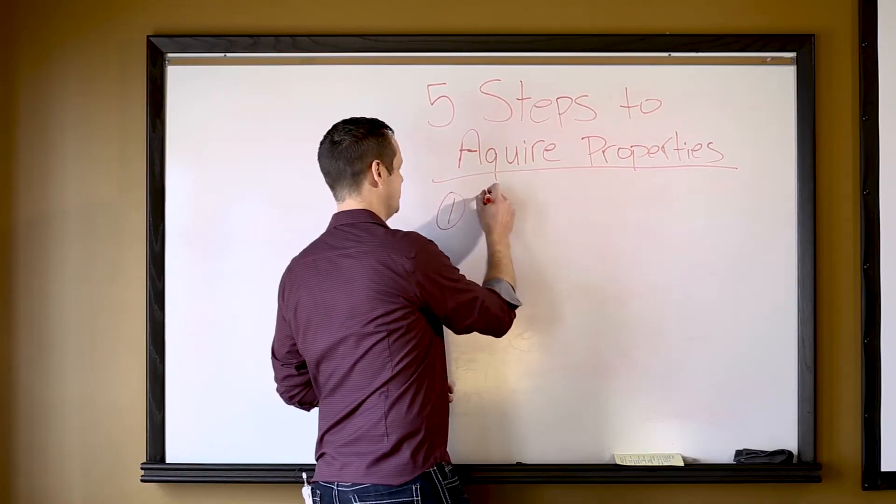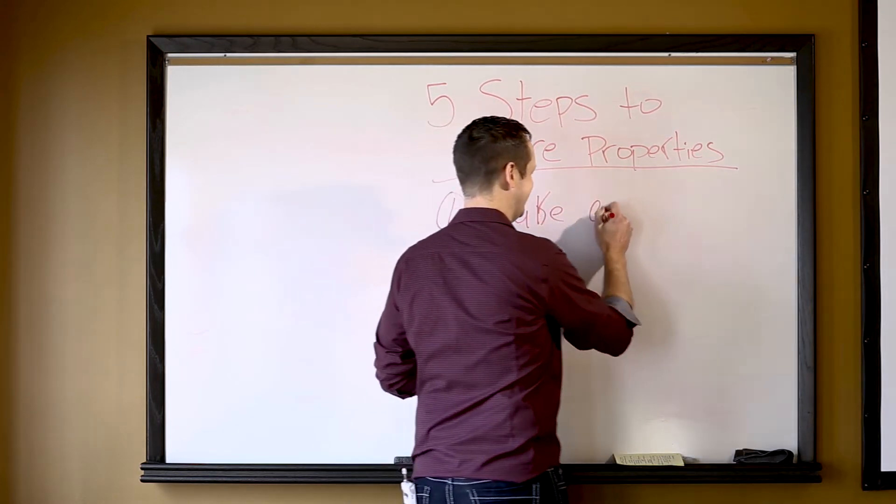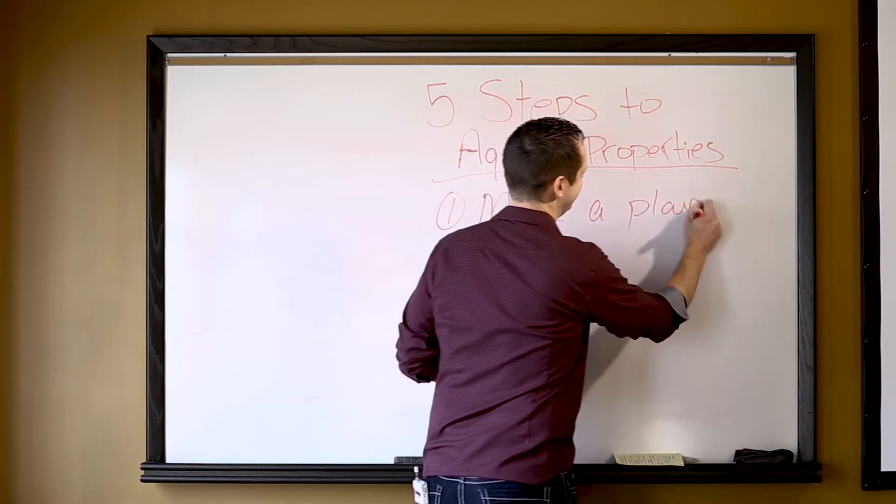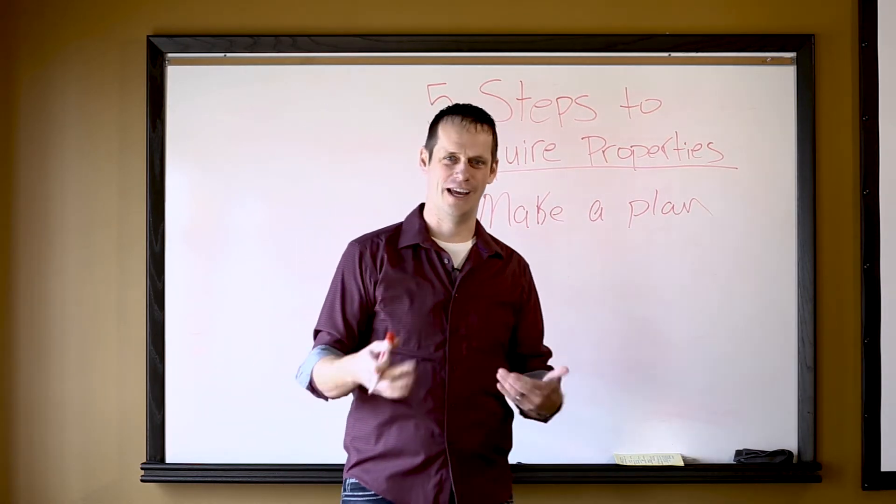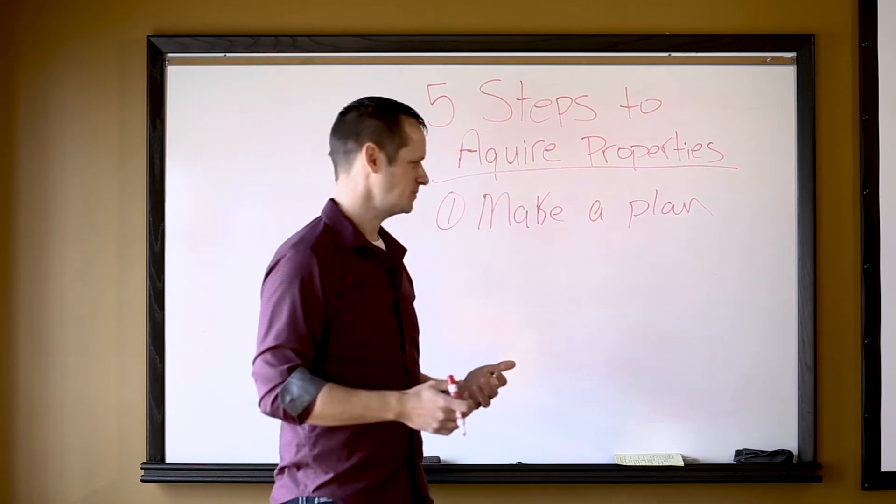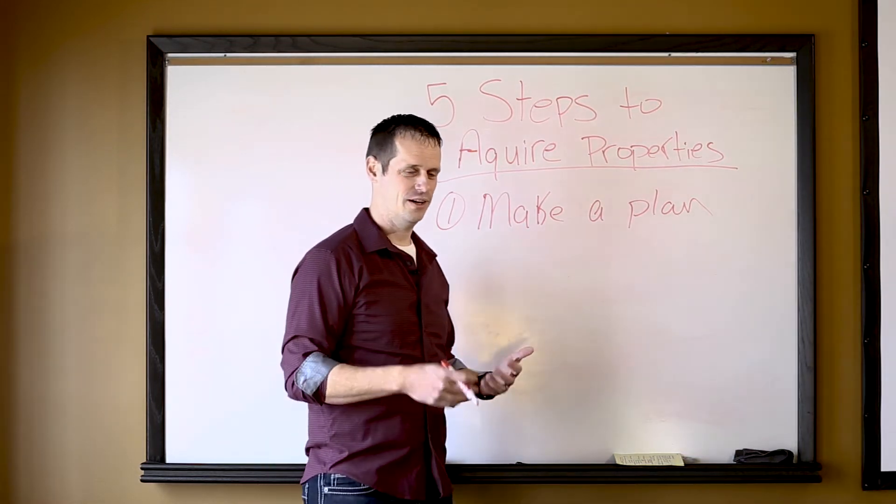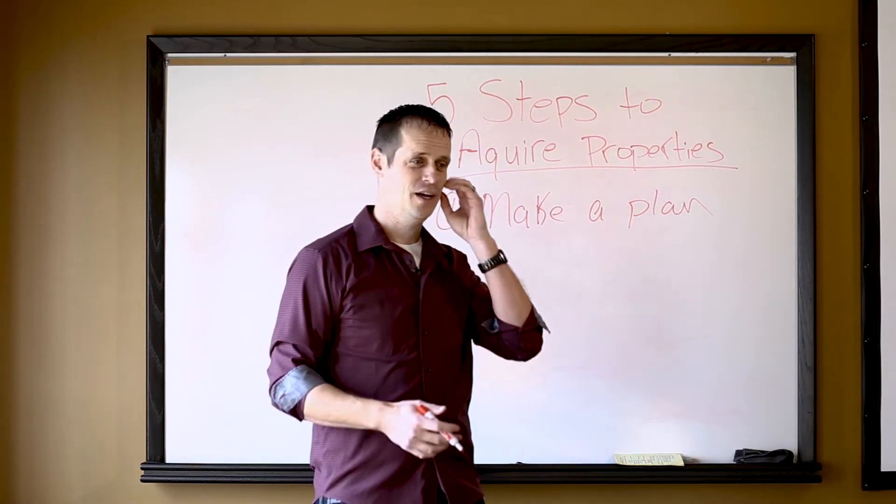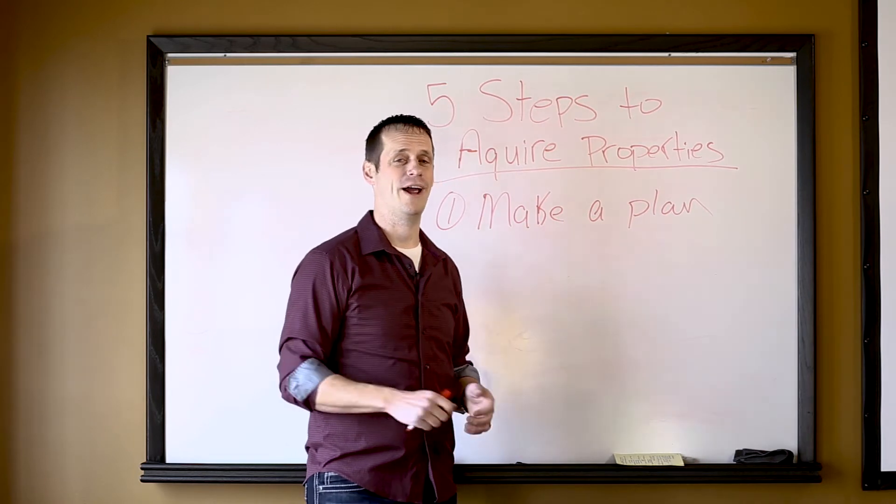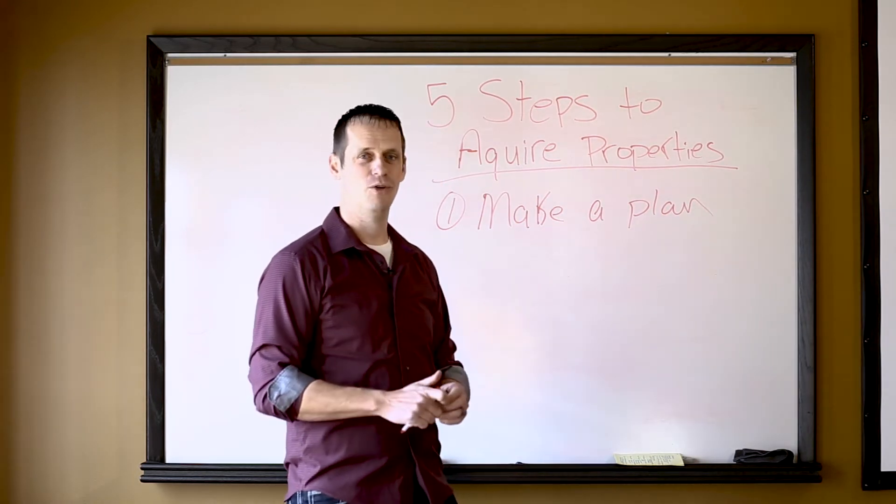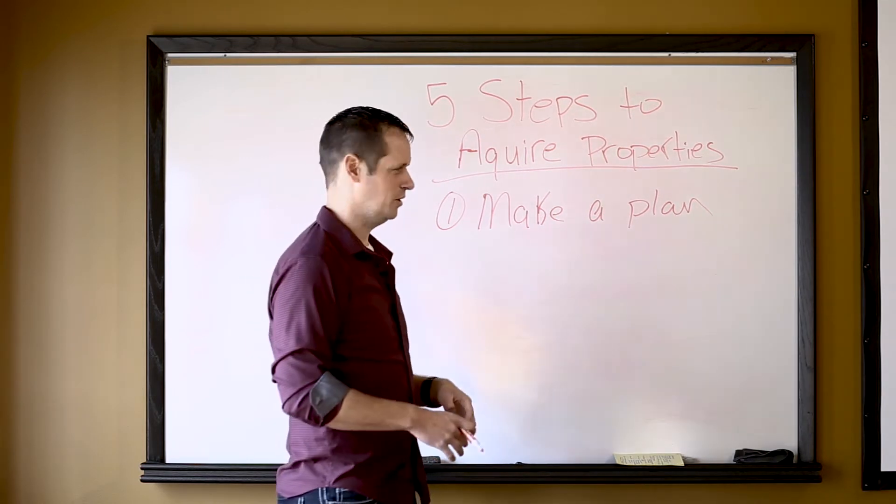The first one is going to be make a plan. I know that sounds pretty straightforward, but let's talk about that a little bit. What does make a plan mean? When you're making a plan or when you're deciding on a property you want to buy, you're going to have to set yourself some certain criteria. You want to determine whether or not maybe you're just going to buy three bed, two bath ranch homes, or maybe you're going to buy only multifamily, something along those lines. You want to decide that and set that criteria for you.